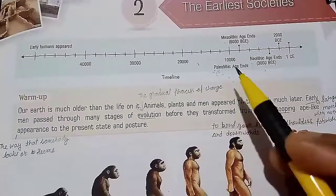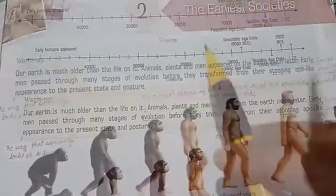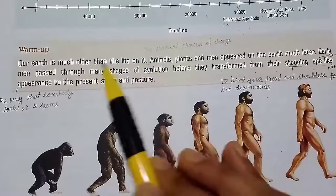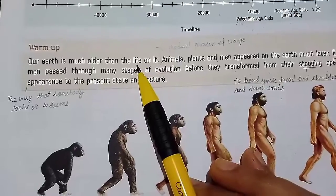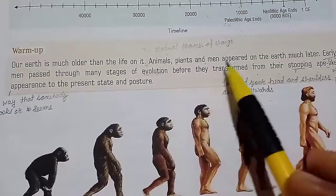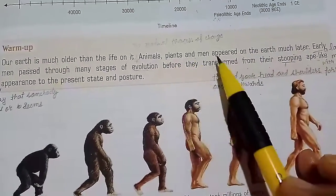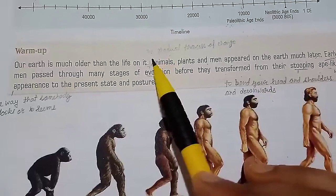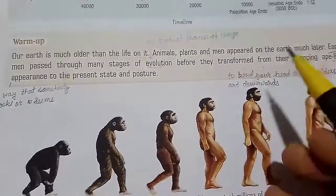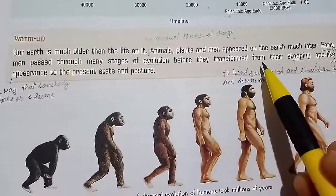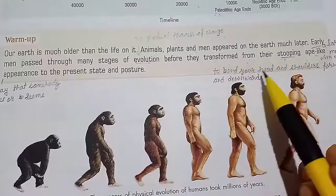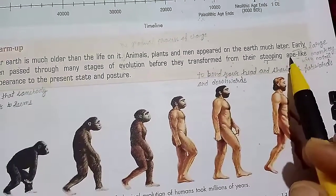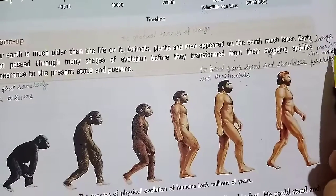We will start our chapter with a warm-up. Our earth is much older than the life on it — hamari jo earth hai wo bahut purani hai, aur life uske upar bahut baad mein aayi. Animals, plants, and men appeared on the earth much later. Early men passed through many stages of evolution. Evolution means the gradual process of change — dheere dheere jo life mein change hua. Before they transformed, they had a stooping posture — stooping means to bend your head and shoulders forward and downward, yaani juk kar chalna. Ape means a large monkey with no tail.